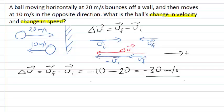Importantly in our answer, minus 30 meters per second, it has a magnitude—that is 30 meters per second—and a direction. That negative sign is saying that the velocity of the ball changed in the direction off to the left. That's the change in velocity.